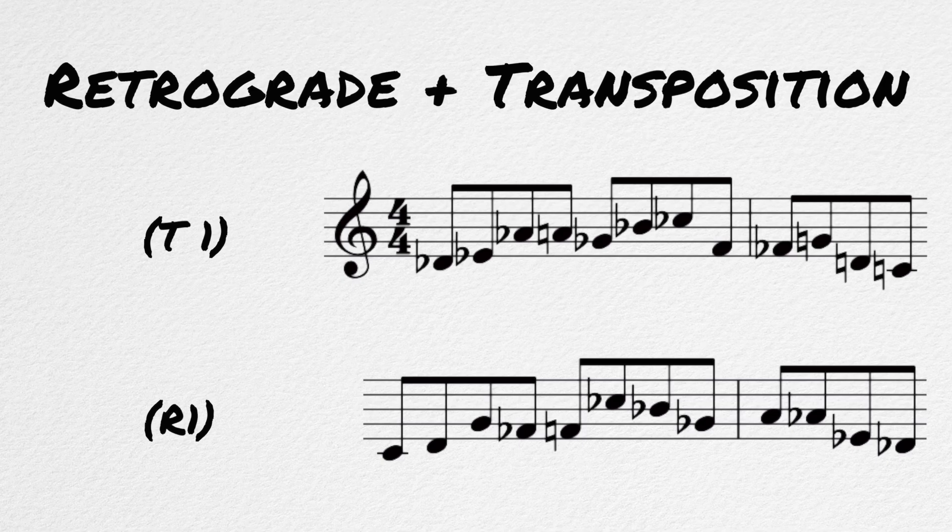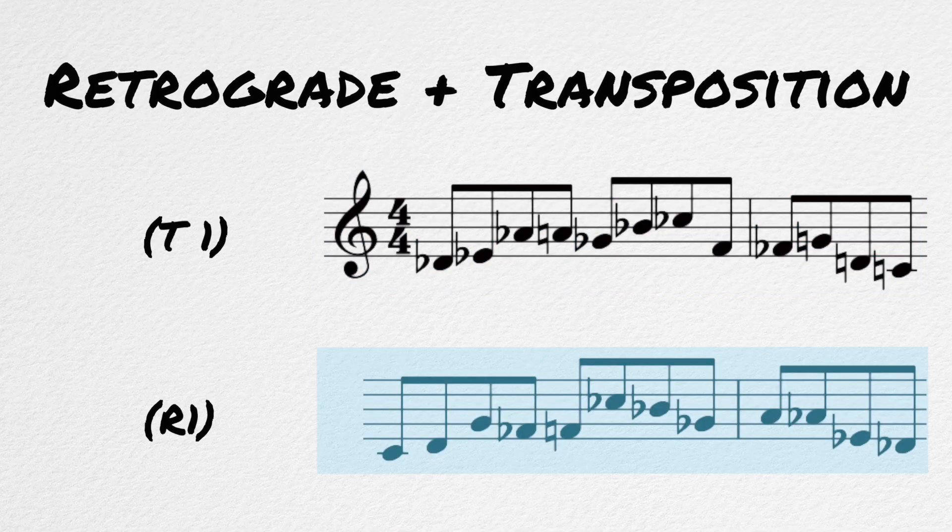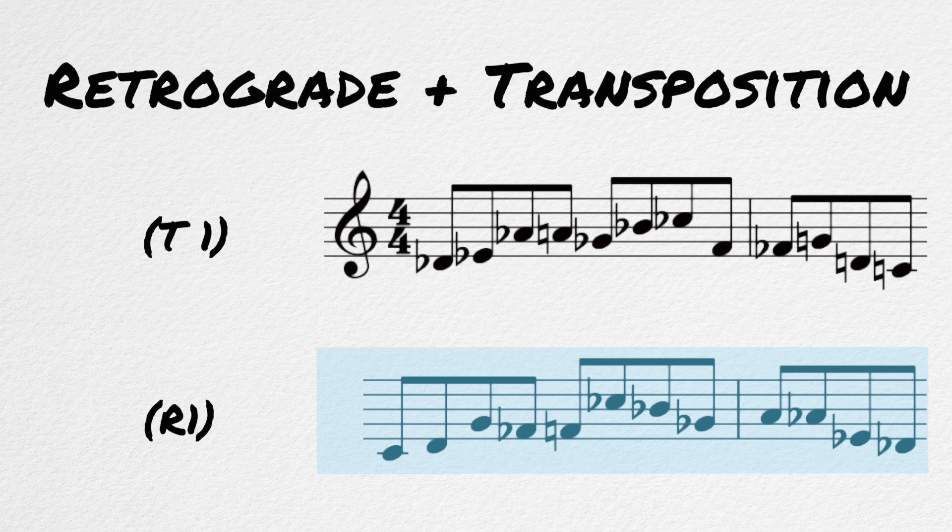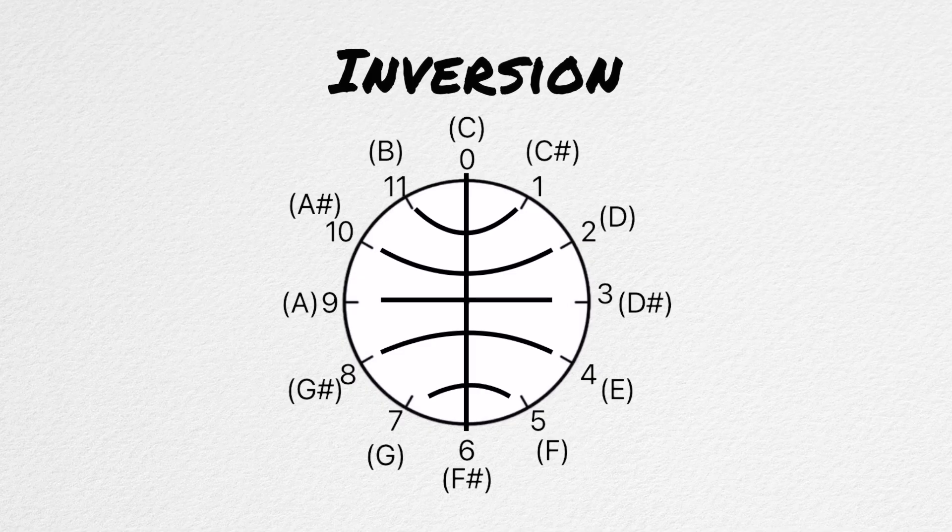Remember, our T1 row was... And if we want to retrograde that row, we would get... This row would be labeled R1. We can invert the row, which means to flip the row over the axis of 0 and 6. Here's a graphic of this. You know you are doing this right if both numbers add up to 12, with the exception of 0.